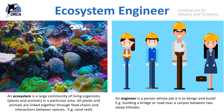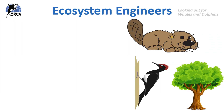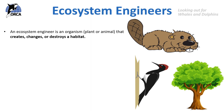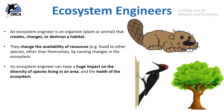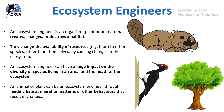So let's add both of these words together to understand what an ecosystem engineer is. An ecosystem engineer is an organism — a plant or animal — that creates, changes or destroys a habitat. They change the availability of resources, for example food, for other species other than themselves by causing changes in the ecosystem. They are certainly not selfish animals, as they help other creatures through their actions. An ecosystem engineer can have a huge impact on the diversity of species living in an area — basically how many different types of animals — and also on the health of the ecosystem. An animal or plant can be an ecosystem engineer through feeding habits, migration patterns or other behaviours, basically anything that results in changes.